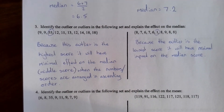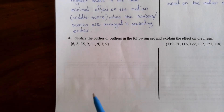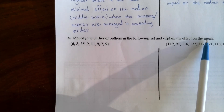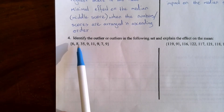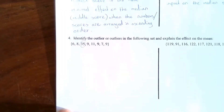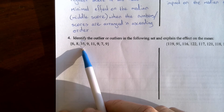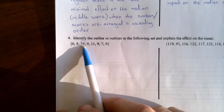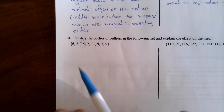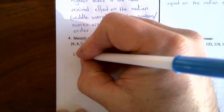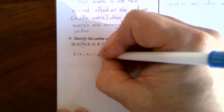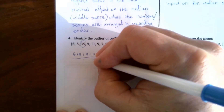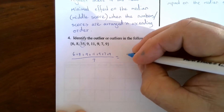Question 4 gives another set of scores and asks us to identify the outlier and determine its impact on the mean. Looking at the data, 35 stands out as the outlier. To see its effect, we work out the average with and without it. Excluding 35, we calculate 6 + 8 + 9 + 11 + 9 + 7 + 9 divided by 7 scores.